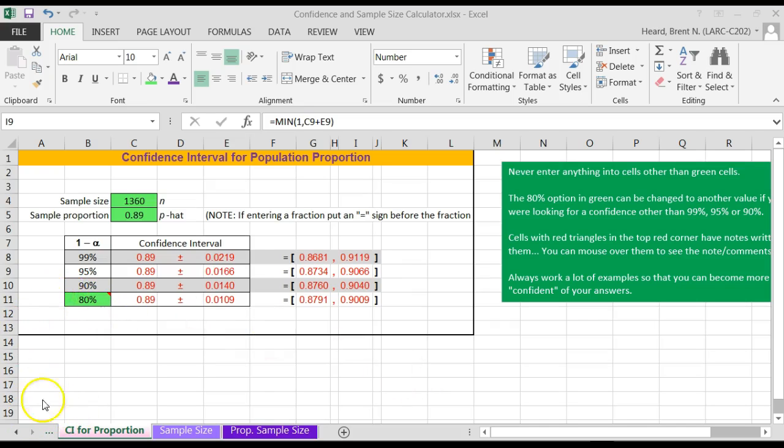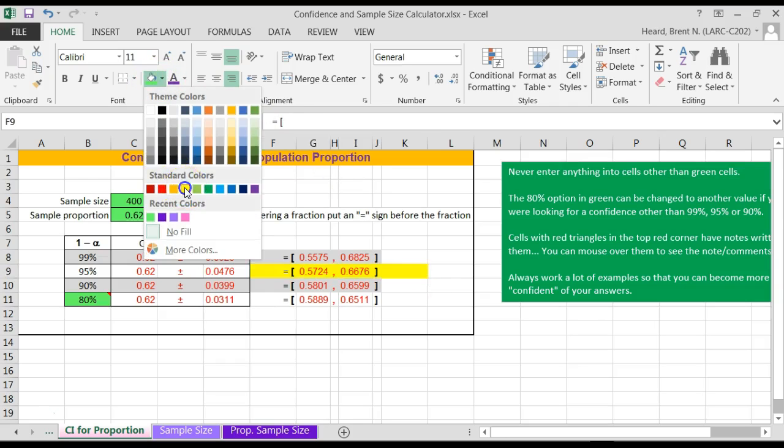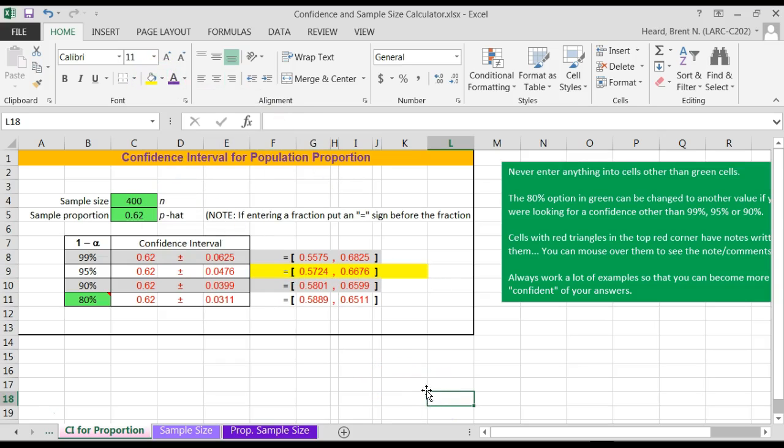Let's see. I've got to remember what it was. So 400 adults. So I put in 400. And it was 62% in county A, 0.62. And they want the 95% confidence interval. Right there it is. I'll make it a silly color for you. But 0.5724 to 0.6676. Round it like you need to round it.